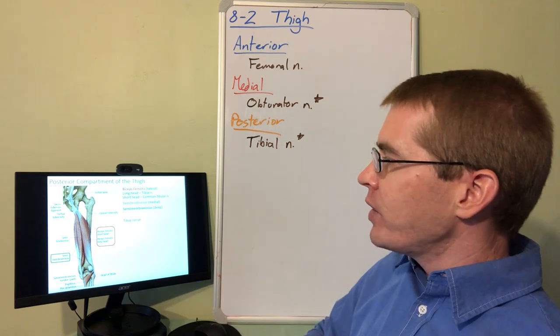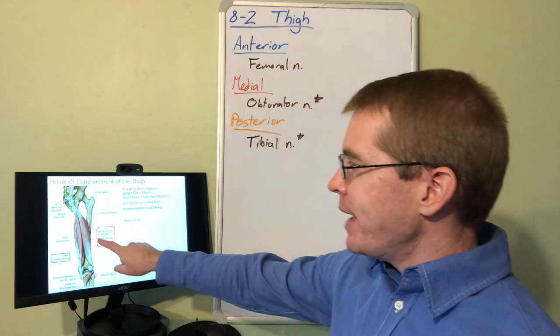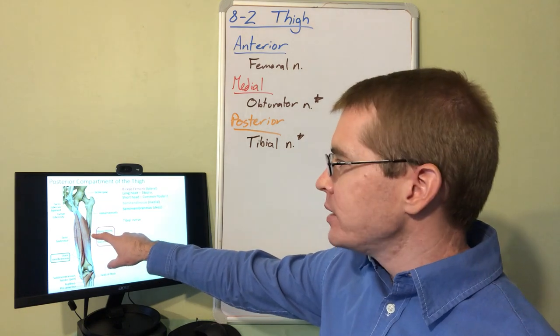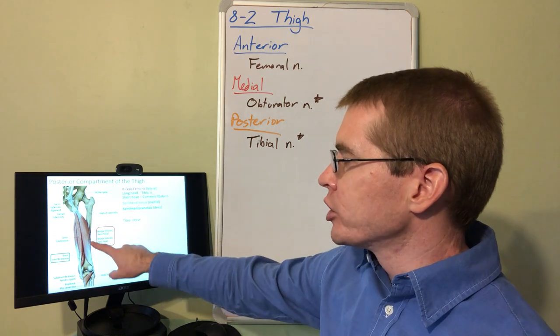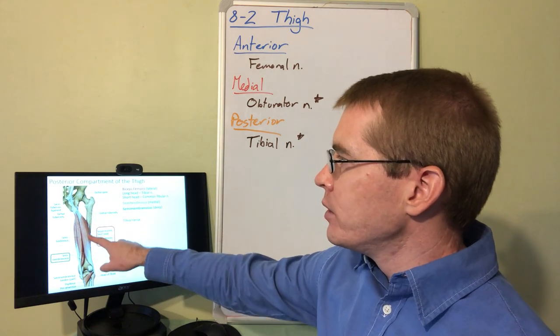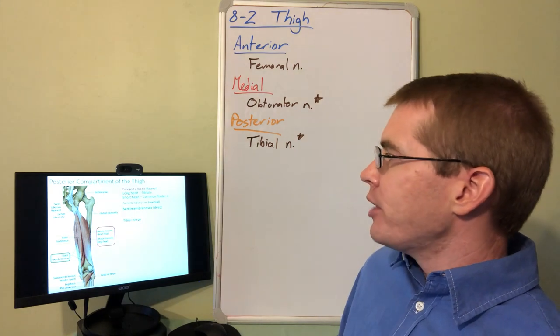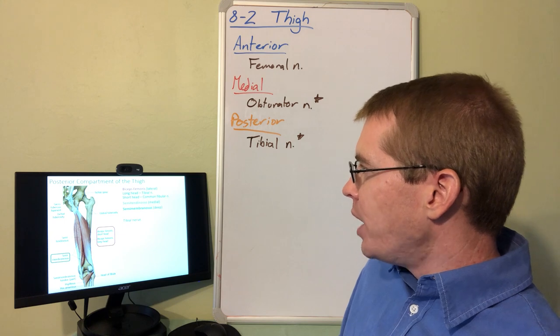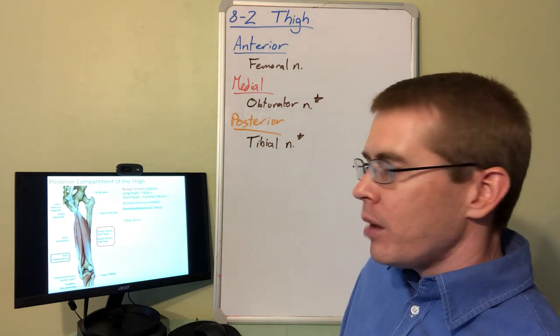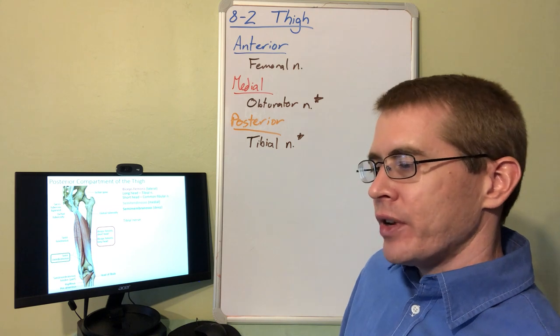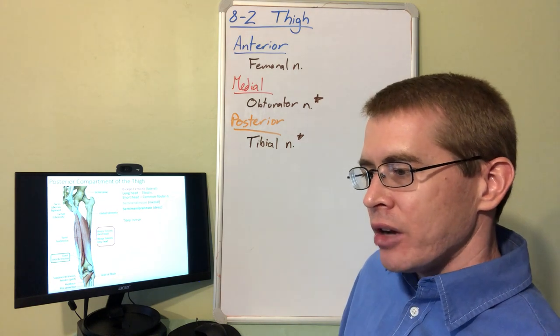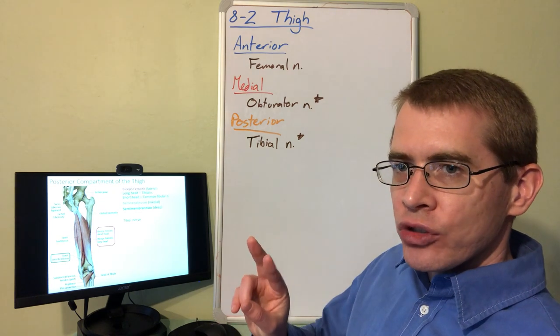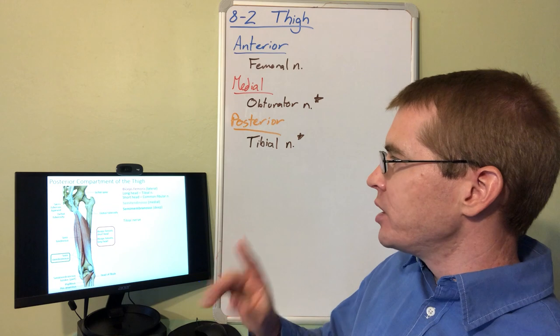One quick caveat is that the short head of biceps femoris, hiding here behind the long head, attaches to the posterior portion of the femur. That short head is actually going to be innervated by the common fibular nerve. Tibial nerve and common fibular nerve are branches of sciatic nerve. When sciatic nerve branches, it becomes one of these two nerves, either common fibular or tibial nerve.